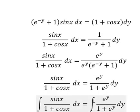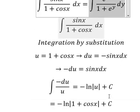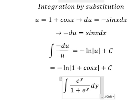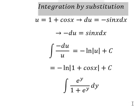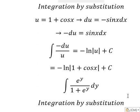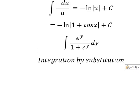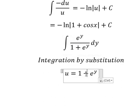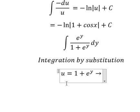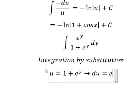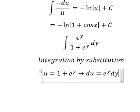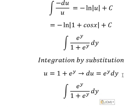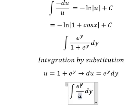Now we need to focus on this one. We can use integration by substitution, so we have u equals to this one. Then we need to do the first derivative for both sides and we have this result. This one we change for u, and this one we change for du.